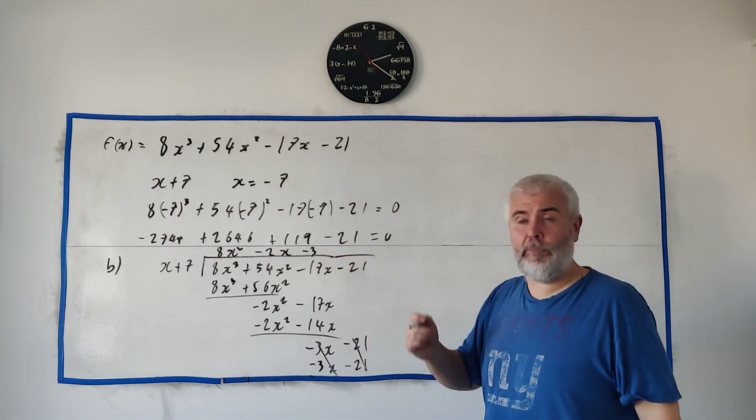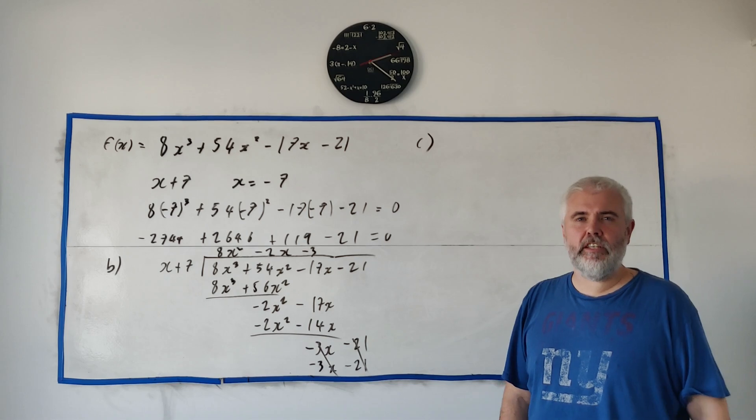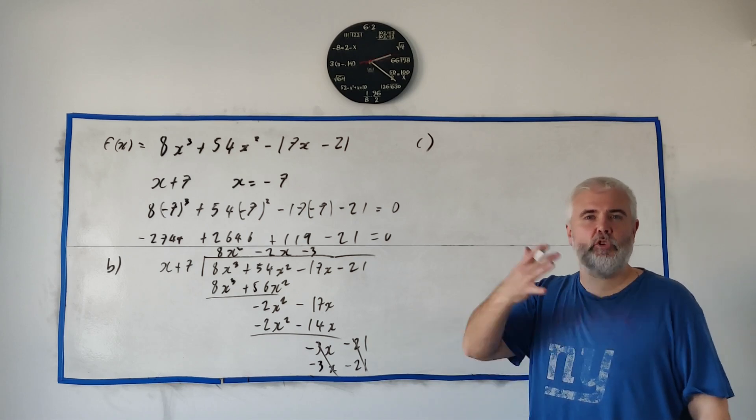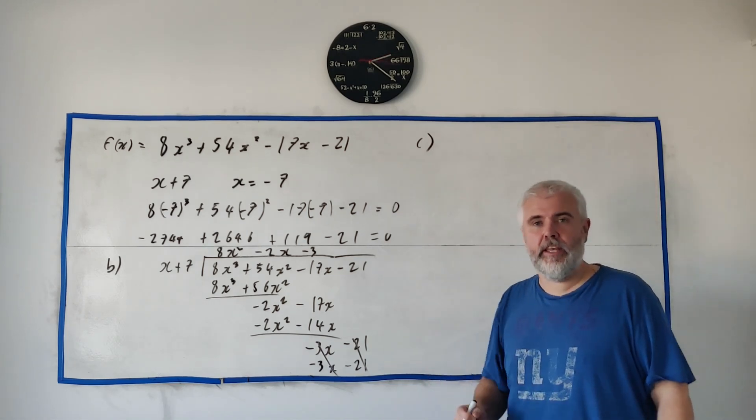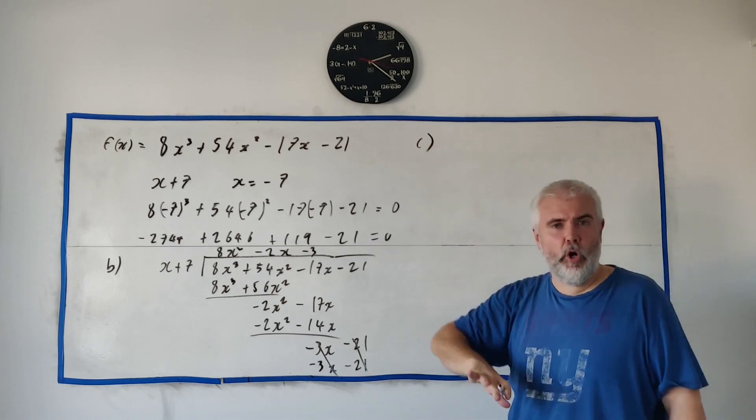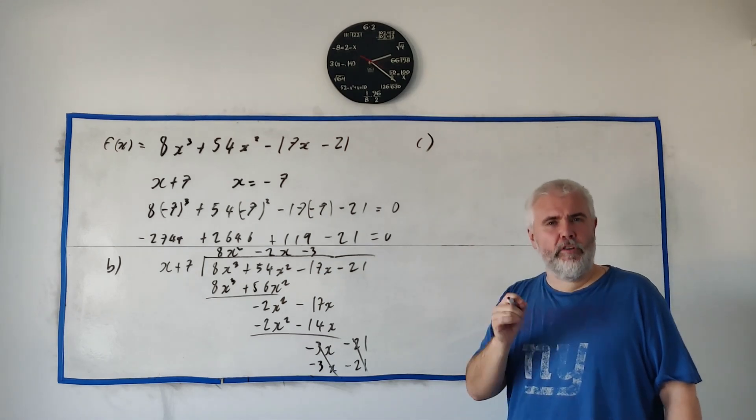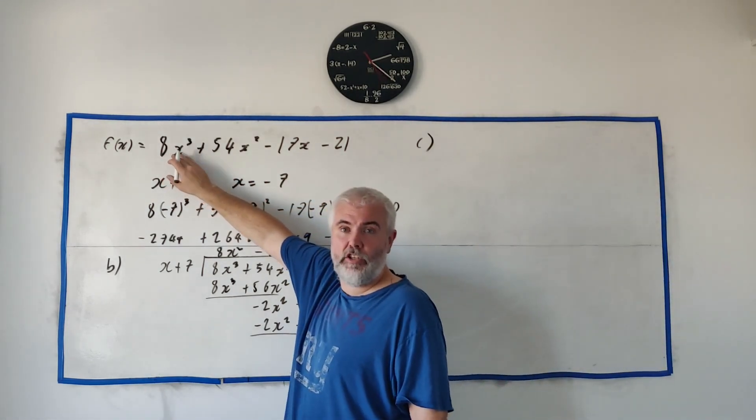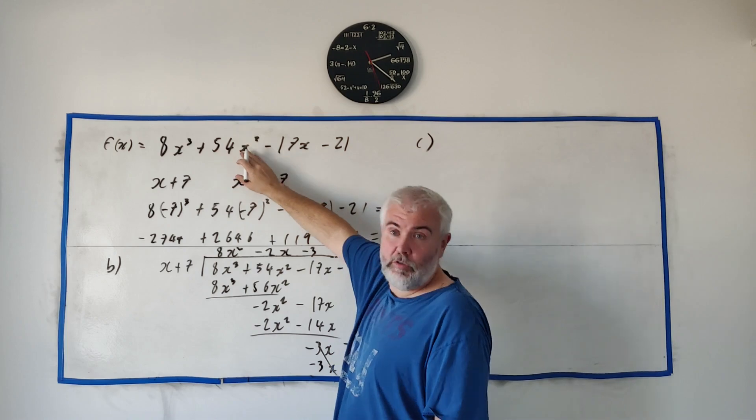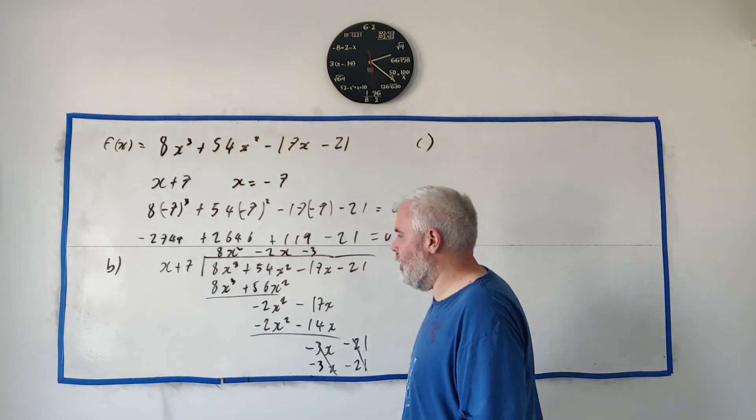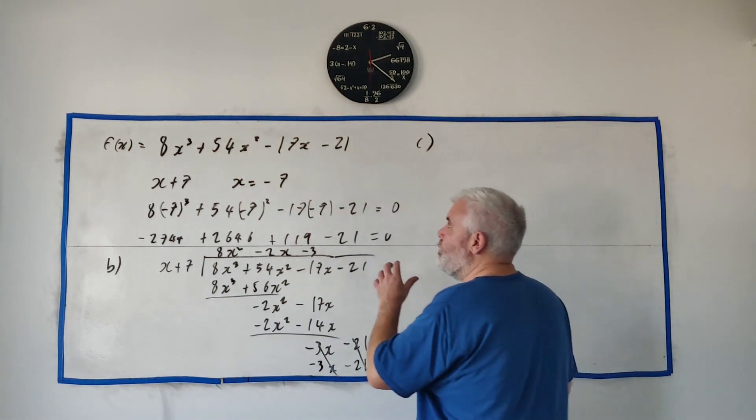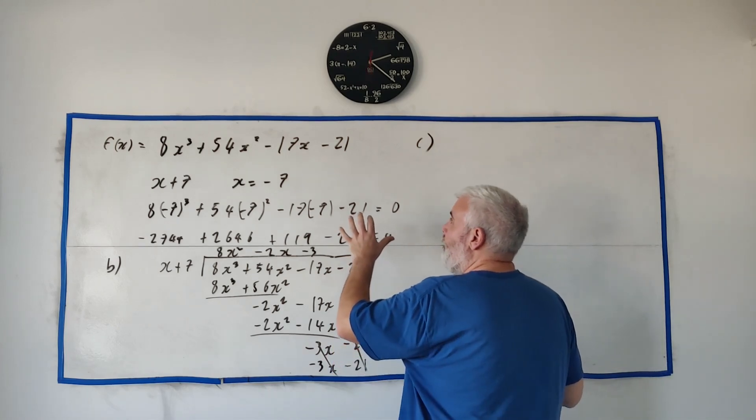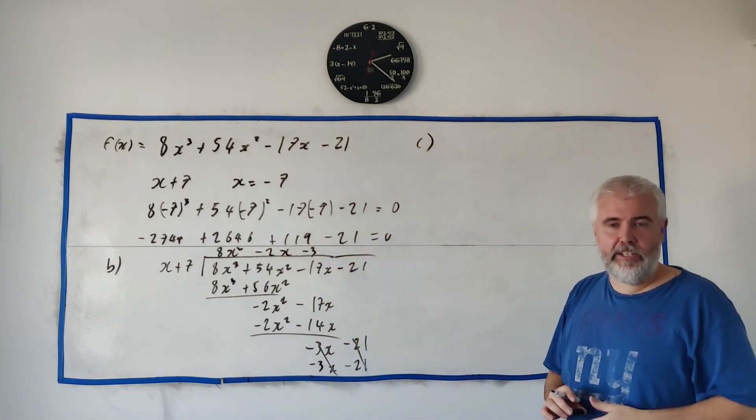For part C they want us to hence solve this other equation with loads of cosines. I won't bother writing it out at the moment but hopefully you notice that that equation with all the cosines is the same as this. It's 8 cosine cubed it's 54 cosine squared we're using the same equation.